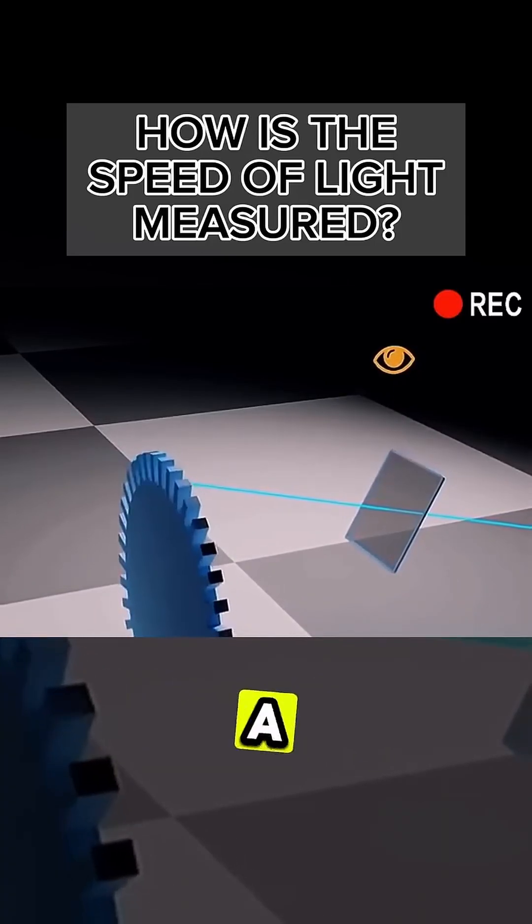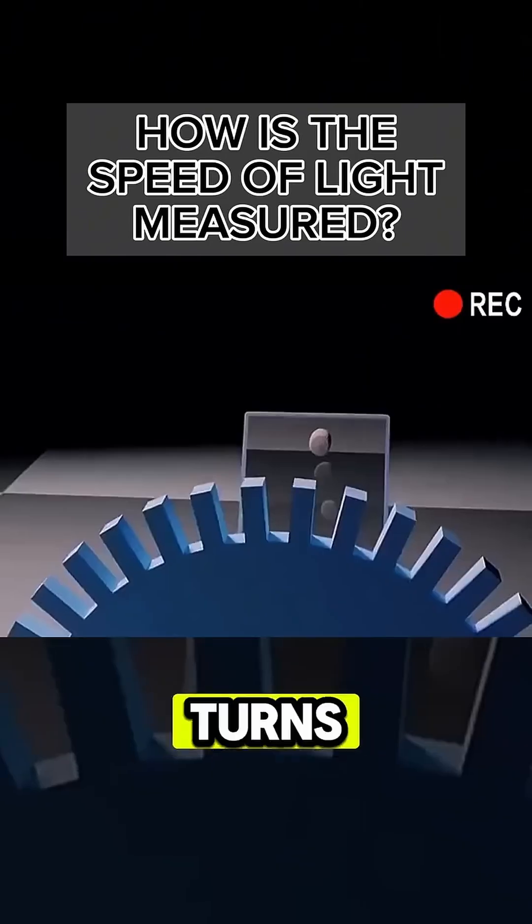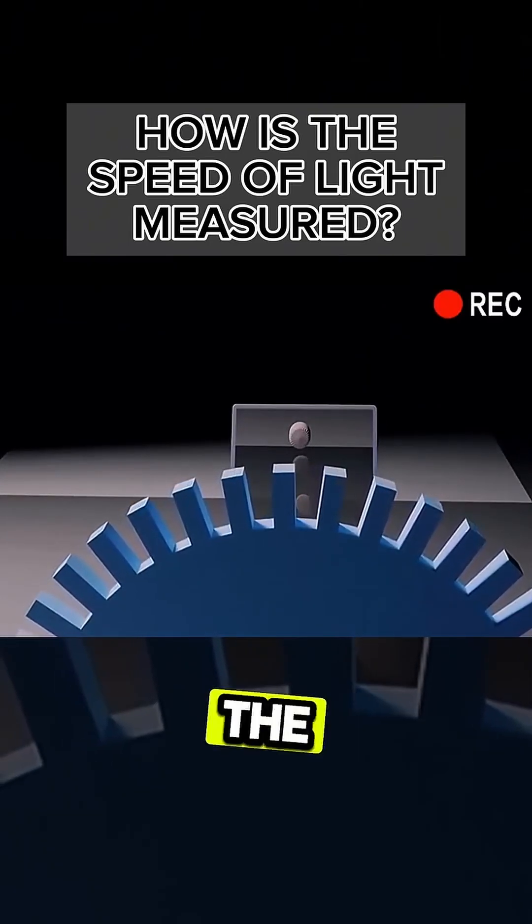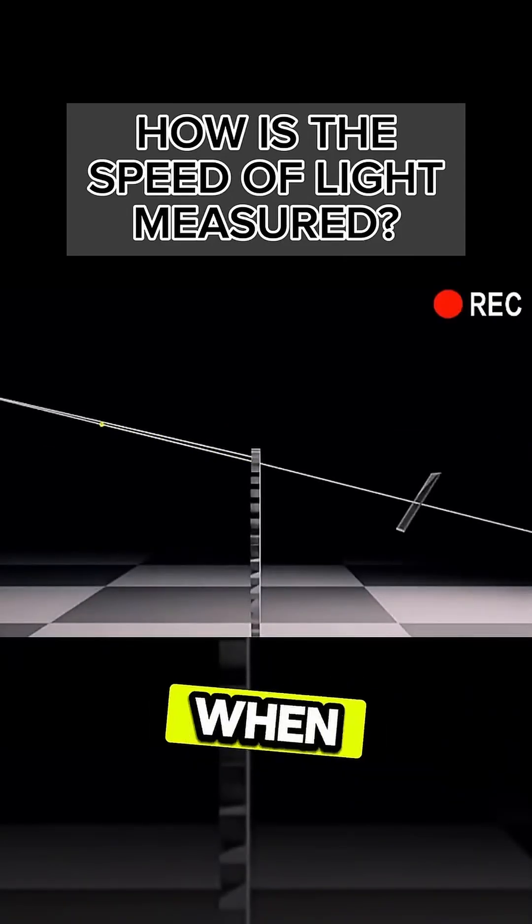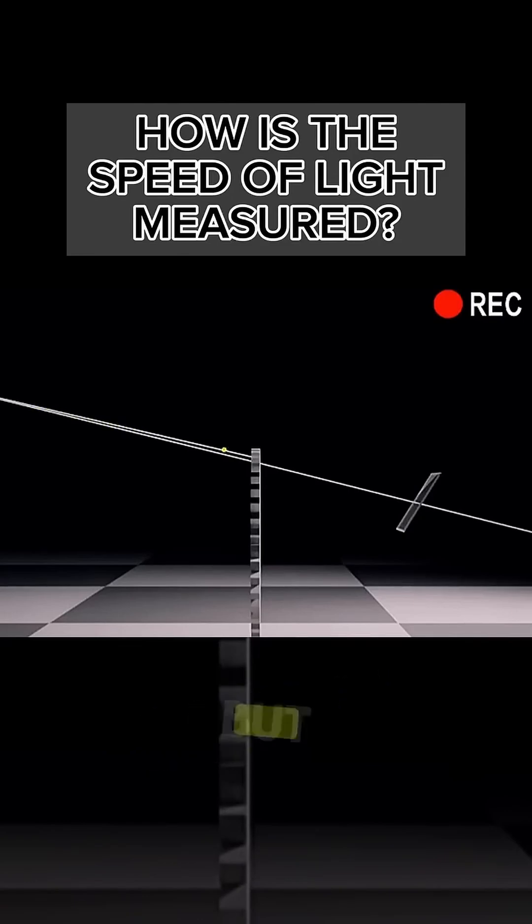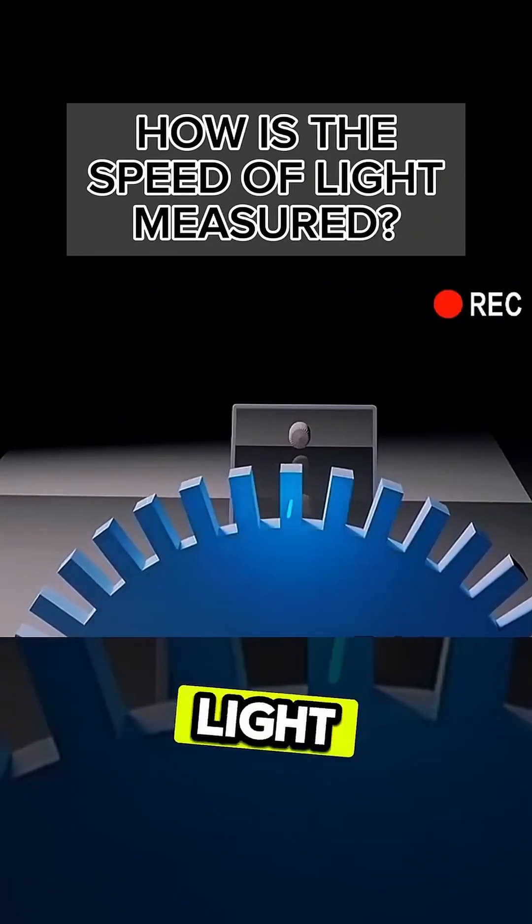You'll realize there's a moment when you can't see any light. And why is that? Well, it turns out that when the gears are spinning fast enough, the light is completely blocked by the teeth of the gears as it passes back and forth through the gears. That means that when the light comes from the right, it can get through the gap to the mirror on the left, but when it returns from the left, it hits the teeth, so we can't see any light at all.